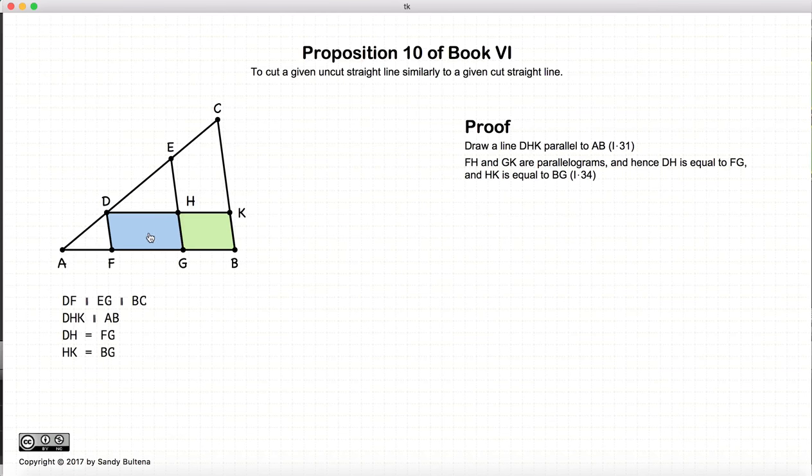So in other words, these segments here, these polygons here, are parallelograms. And because they're parallelograms, that means that DH is equal to FG, and HK is equal to GB.